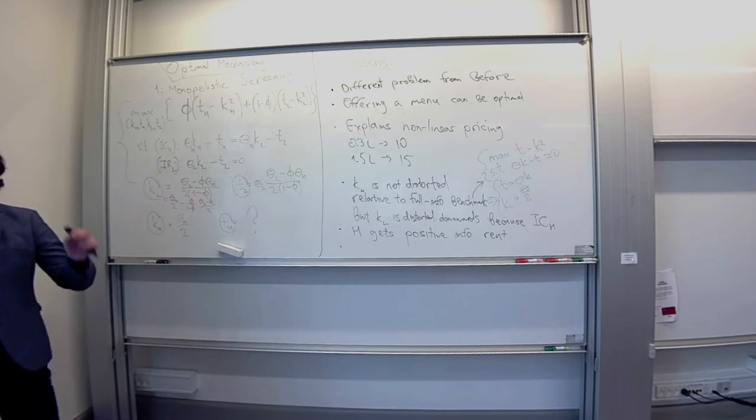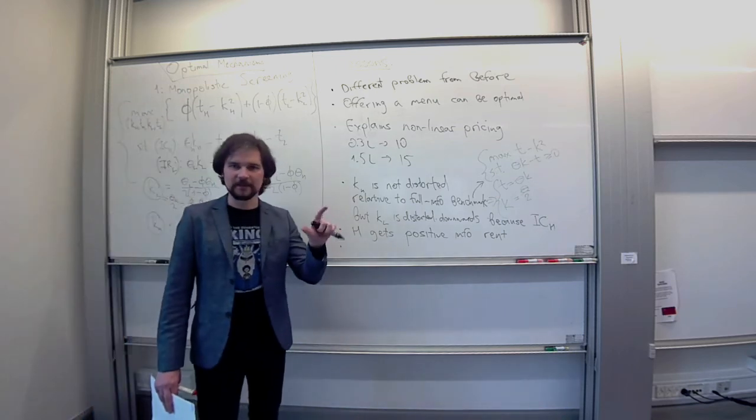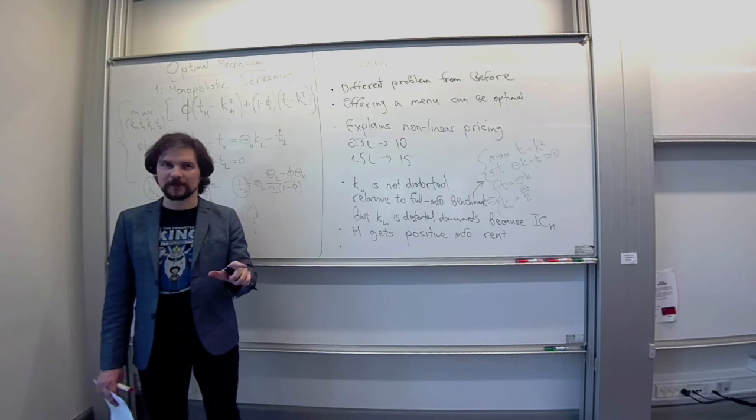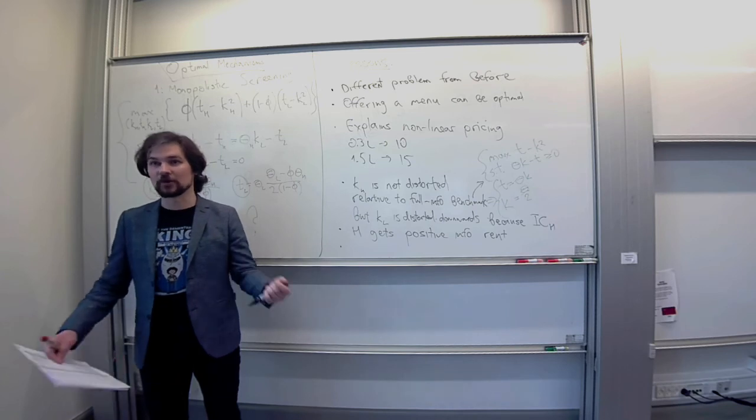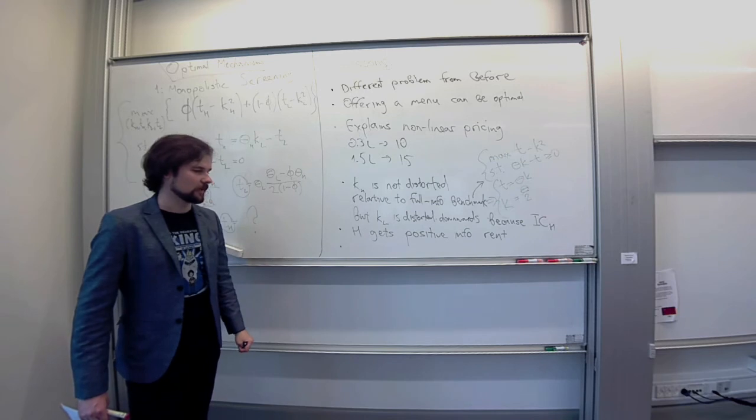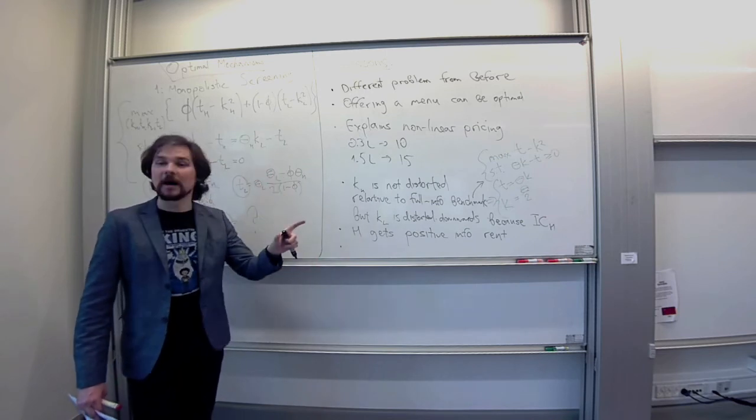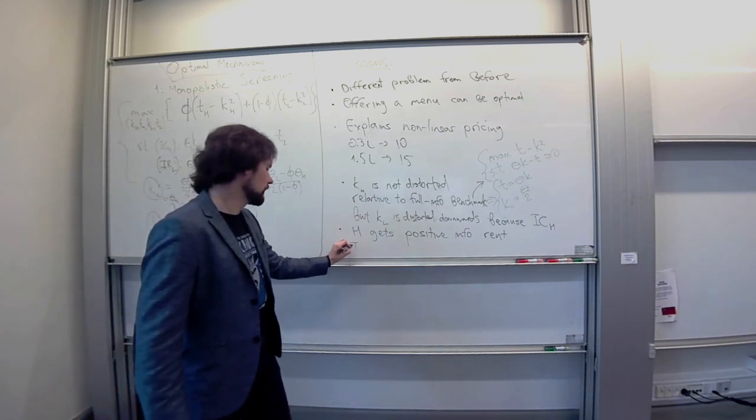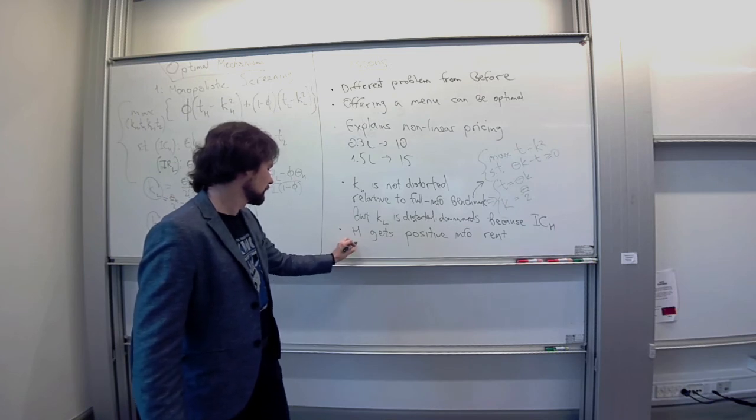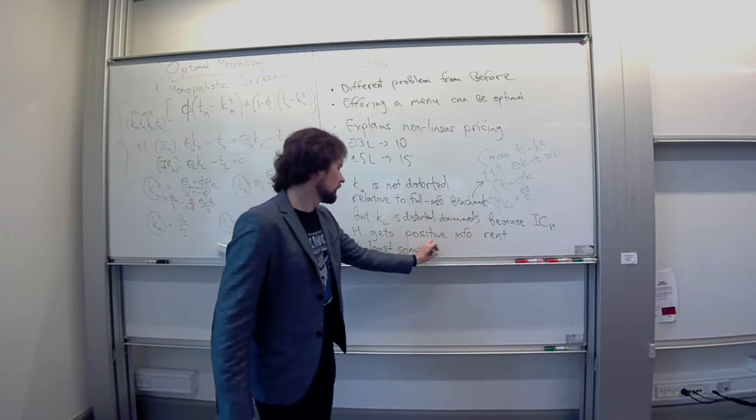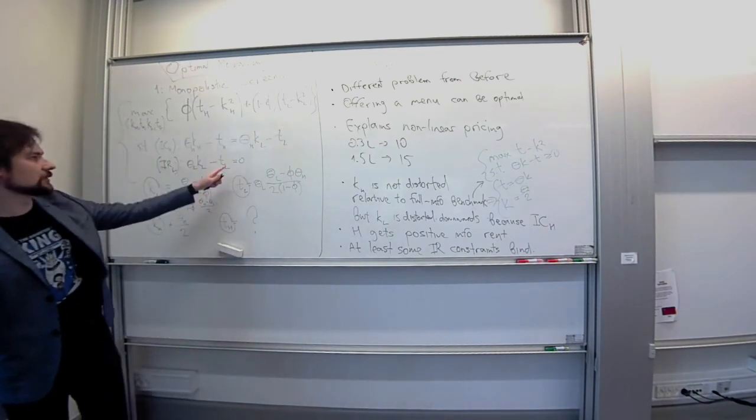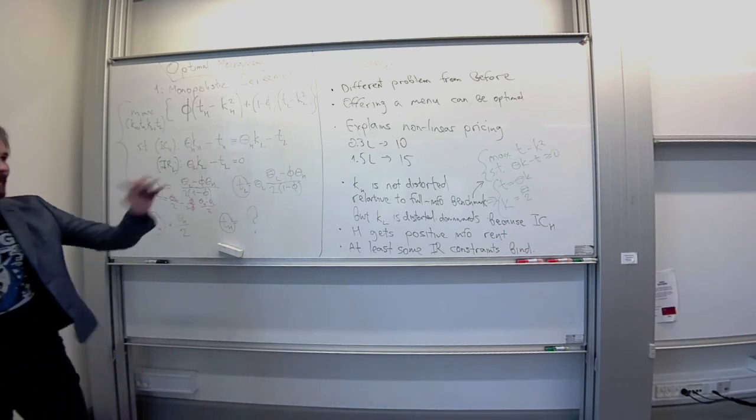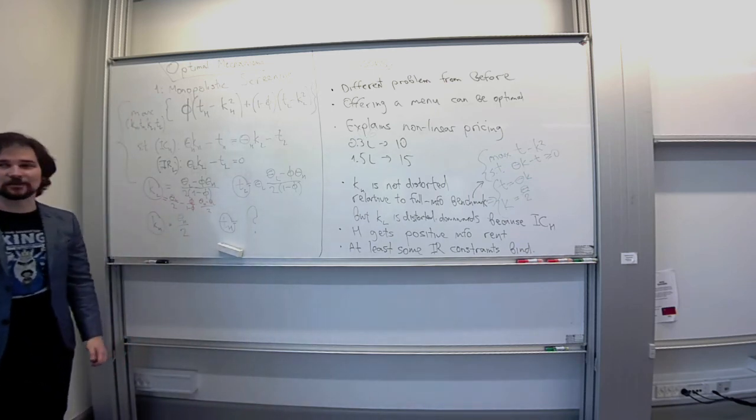And finally, one final conclusion is that our incentive compatibility constraints pin down the relative prices and relative quantities that the two players get. But then we can scale both transfers up or down. And we obviously want to set transfers as high as possible to maximize our revenue because transfers are our revenue. And so, what it means is that there's some upper bound on transfers. And this upper bound in our problem is given by IR constraints. The conclusion here is that at least some IR constraints bind, that they're satisfied with equality.